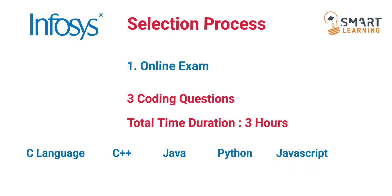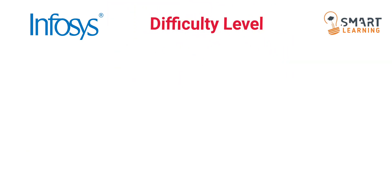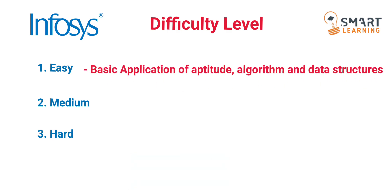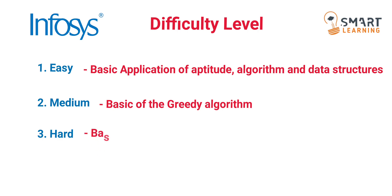Coming to the difficulty level — the first coding question will be somewhat easy, the second one will be medium, and the third coding question will be very hard. The first coding question may come from topics like basic application of aptitude, algorithm, and data structures. The second question may come from basics of greedy algorithm. The third coding question may come from dynamic programming.